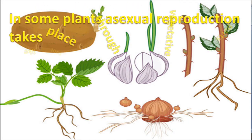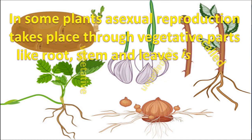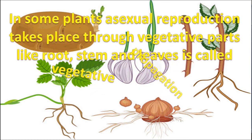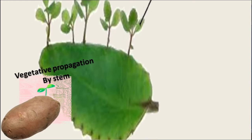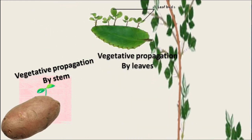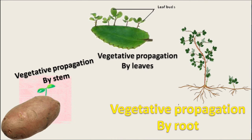In some plants, asexual reproduction takes place through vegetative parts like roots, stems, and leaves — this is called vegetative propagation. It takes place by various methods like vegetative propagation by stem and vegetative propagation by leaves.